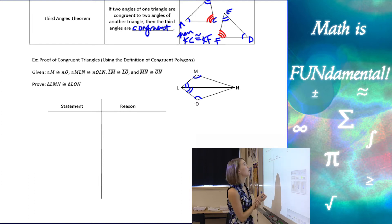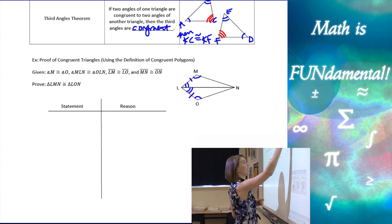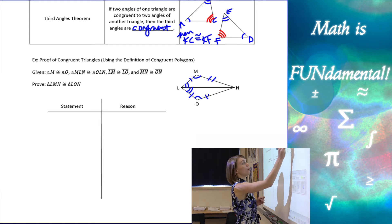Next I have angle MLN, which is this one here, is congruent to angle OLN. And then I know that LM is congruent to LO, so those are side lengths—we mark them with the little dash marks—and MN is congruent to ON.